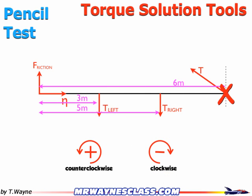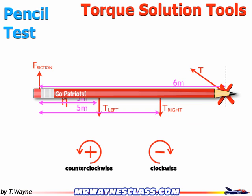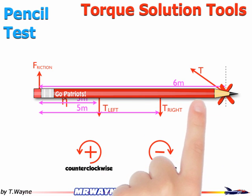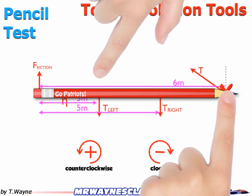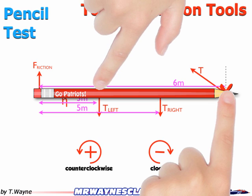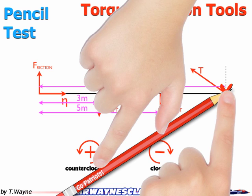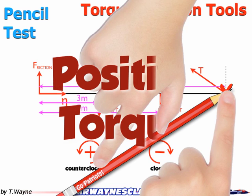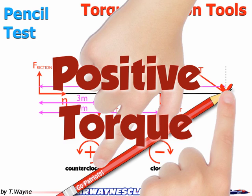Now I'll move my pivot point to the other end of the beam — I'm not changing anything but the pivot point. I put my pencil back in place, put my finger at the new pivot point, and apply the force again at the same spot on the tension of the left rope. This time when it rotates down, you can see it goes counterclockwise, making it a positive torque. So the signs of the torque depend upon a combination of the direction of the force and where you choose that pivot point.